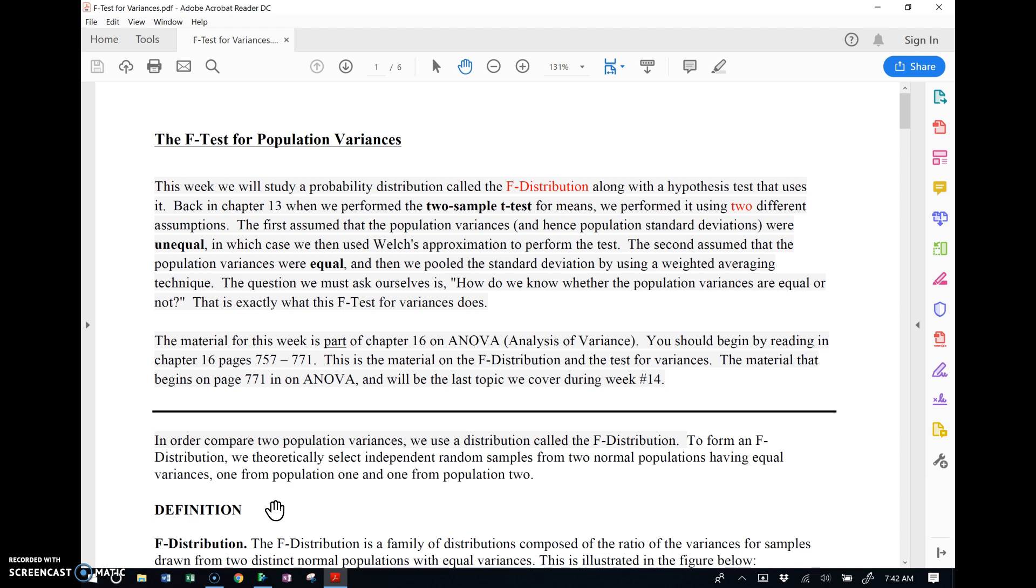So remember the F-test is typically used prior to doing a two-sample t-test for the difference of two population means because you need to make a decision: am I going to do Welch's t-test assuming that the population variances are unequal or am I going to do the pooled version of the two-sample t-test assuming equal variances.